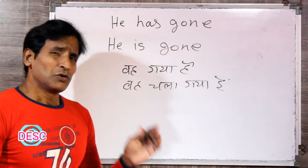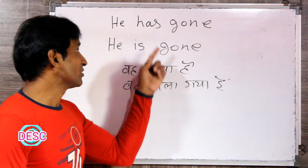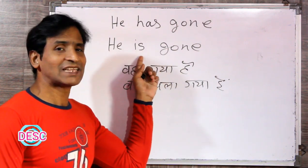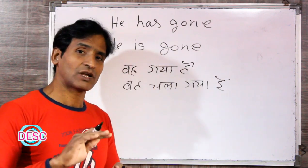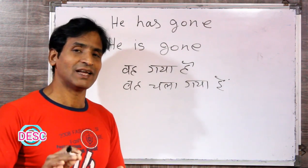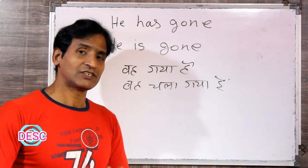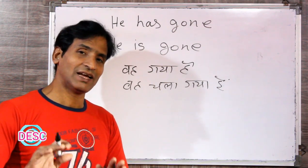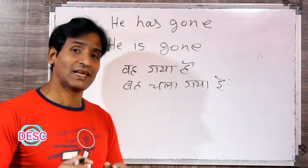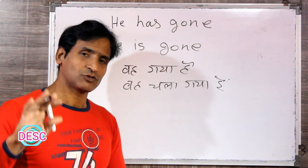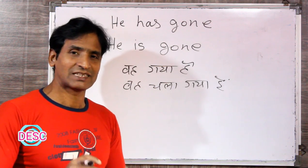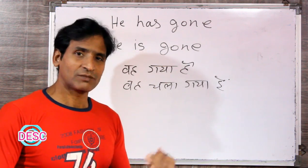But some people explain it this way: there is a difference between the two. They say 'he is gone' is used when the action is fully complete — for example, 'he has gone to Mumbai,' meaning he has already reached Mumbai and is there. And 'he has gone' means he has left for Mumbai but hasn't necessarily arrived yet — he is on the way.